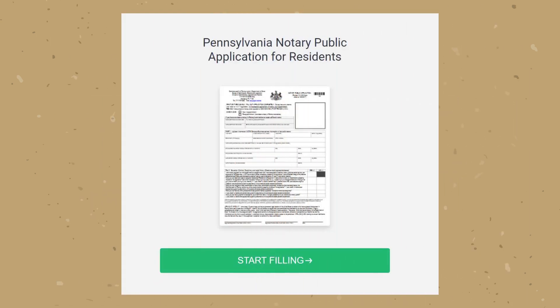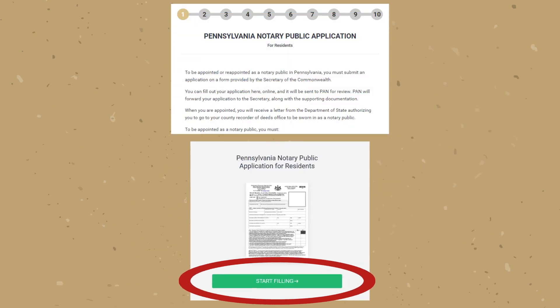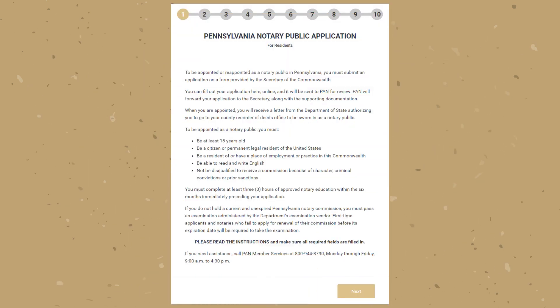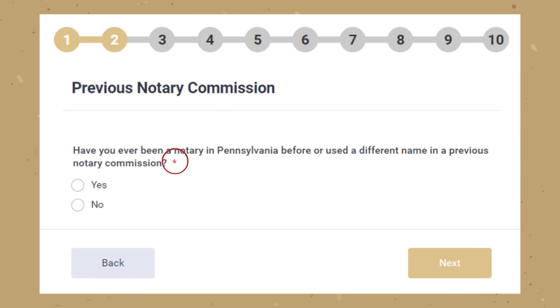You will then be prompted to start filling out the online notary application. Before you start the application you will need to read the instructions. Once you're finished with the instructions click Next. Wherever you see an asterisk during this process, that question or section must be completed.